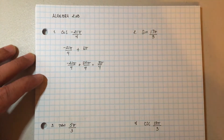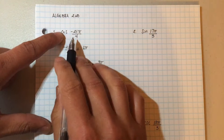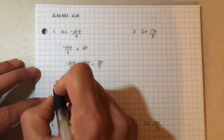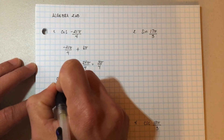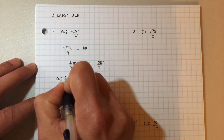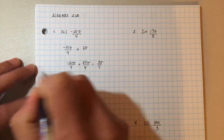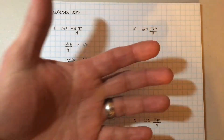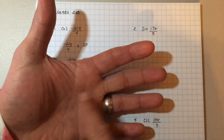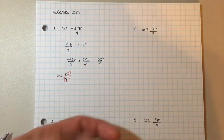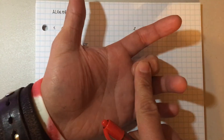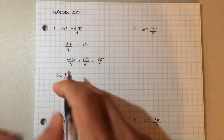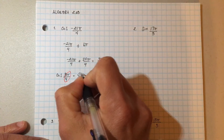Now essentially what that means is that negative 21π over 4 is the exact same location as 3π over 4. So now all I have to do is find cosine of 3π over 4. I'm going to look at my reference angle, which is π over 4. Using my hand — π over 4 is the middle finger — and fold that one. Cosine is the top. How many fingers on the top? 2. So the answer is square root of 2 over 2.